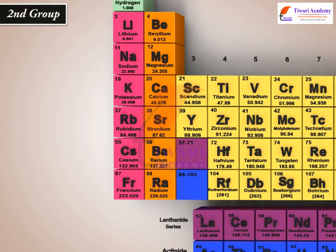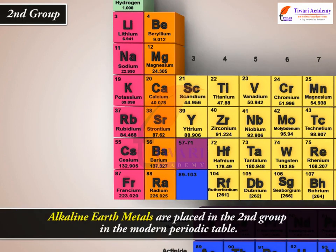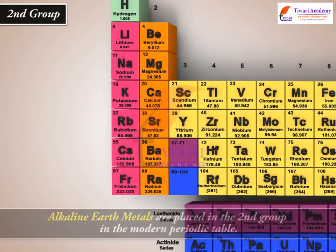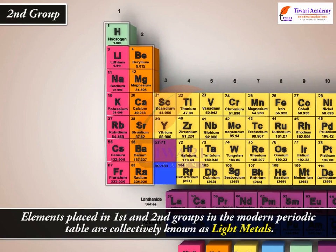Alkaline earth metals are placed in the second group in the Modern Periodic Table. Elements placed in first and second groups in the Modern Periodic Table are collectively known as light metals.